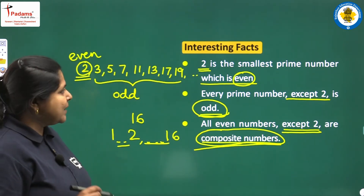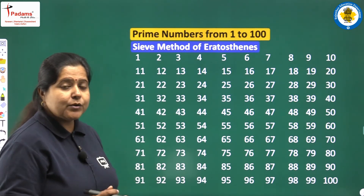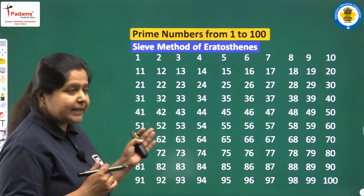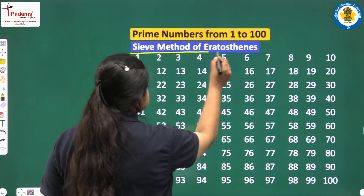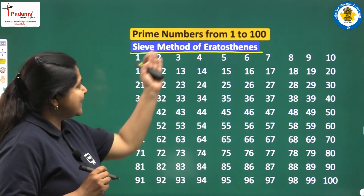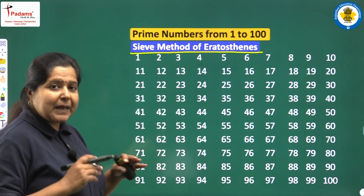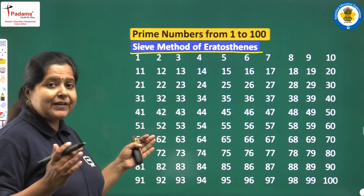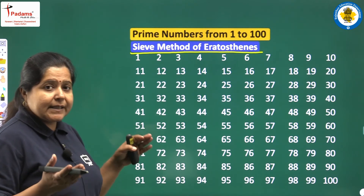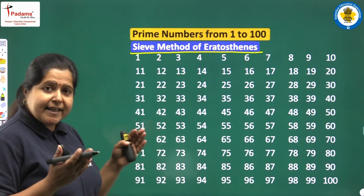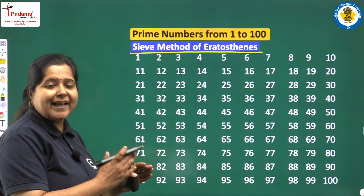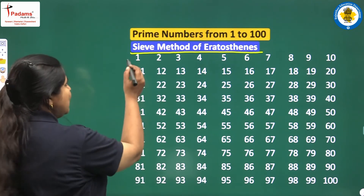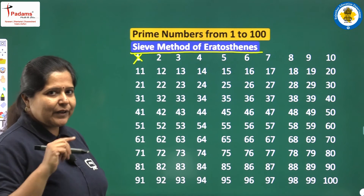Now we have numbers from 1 to 100 and we will find out which of these numbers are prime and which are not. For this we will be using the Sieve of Eratosthenes, a method given by a Greek mathematician, Eratosthenes. In it, we will be applying a filter and separating prime numbers from the remaining numbers — just like when we separate two things by the help of a sieve. We start with the number 1. We know that this is not a prime number, so we cross it.